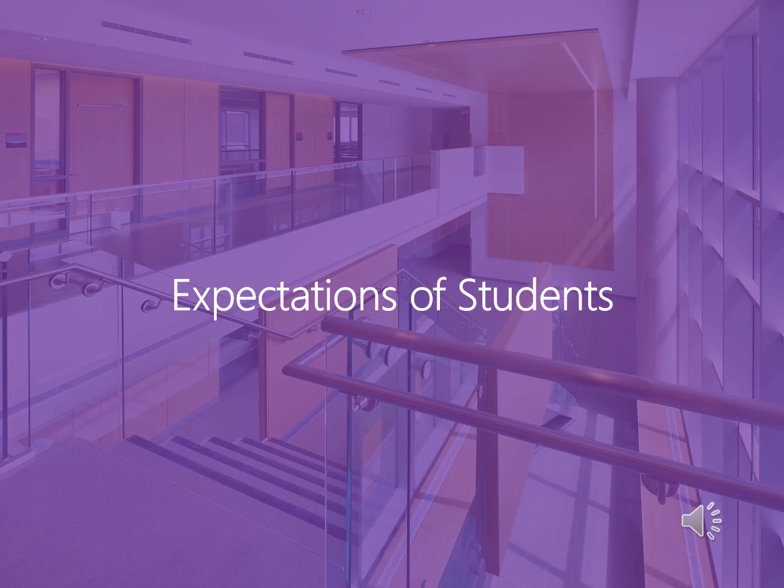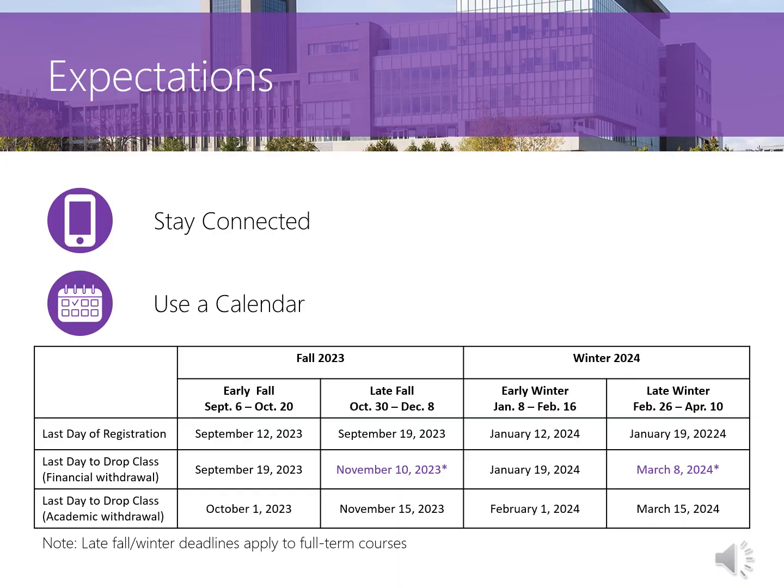First, let's start with the expectations of students. One of the first and most important things is to stay connected. Make sure to activate your Carleton University provided email account. Check this email multiple times daily as it is the preferred and often only way that university officials will contact you. A tip from upper year students is to sync your email to your phone or personal email so you never miss an important or time-sensitive email.